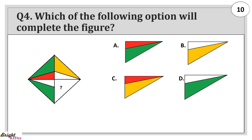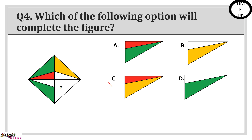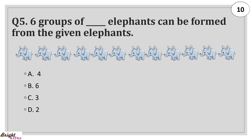Which of the following option will complete the figure? Answer: C. Six groups of Dash elephants can be formed from the given elephants.